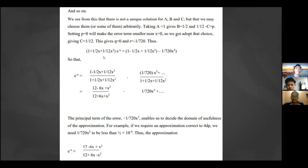We simplify the equation then we get (12 - 6x + x²) / (12 + 6x + x²) - (1/720)x⁵ + ... This is a 2/2 Padé approximation, since the highest power of numerator and denominator is 2.